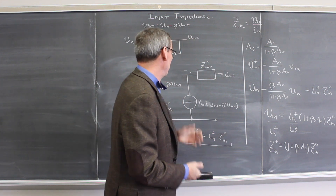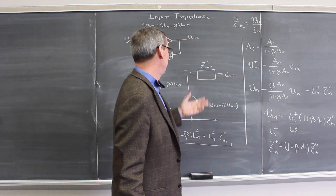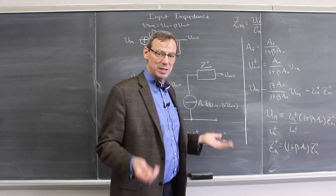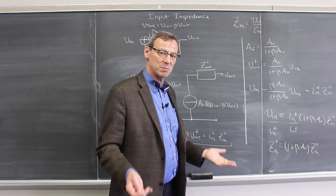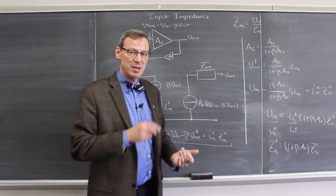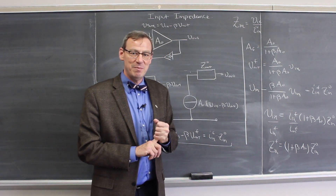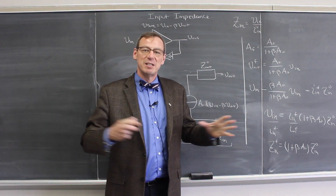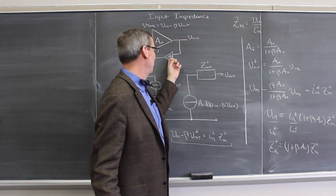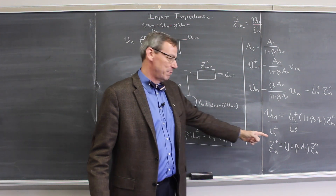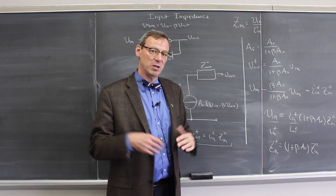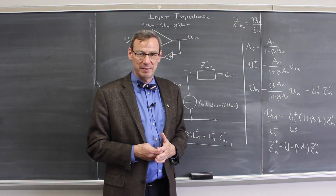We could do the same thing with the output impedance and find that negative feedback actually makes it smaller. So making the output impedance smaller and the input impedance bigger are both very good things for an amplifier. Negative feedback stabilizes the gain at a value we can control precisely by the feedback fraction, gives us a bigger input impedance and a smaller output impedance — so it's all a very good thing to do with an amplifier.